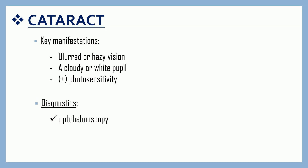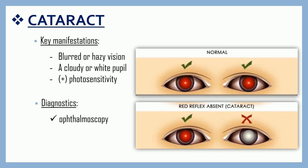Diagnostics: Ophthalmoscopy is done by dilating the pupil and assessing for the presence of red reflex. Small cataracts stand out as dark defects, while large cataracts may obliterate the red reflex. In short, for a patient with cataracts, there is no red reflex upon examination. We also have slit lamp examination, which is used to see the structures at the front of your eye under magnification. The microscope is called the slit lamp because it uses an intense line of light — a slit — to illuminate your cornea, iris, and lens.